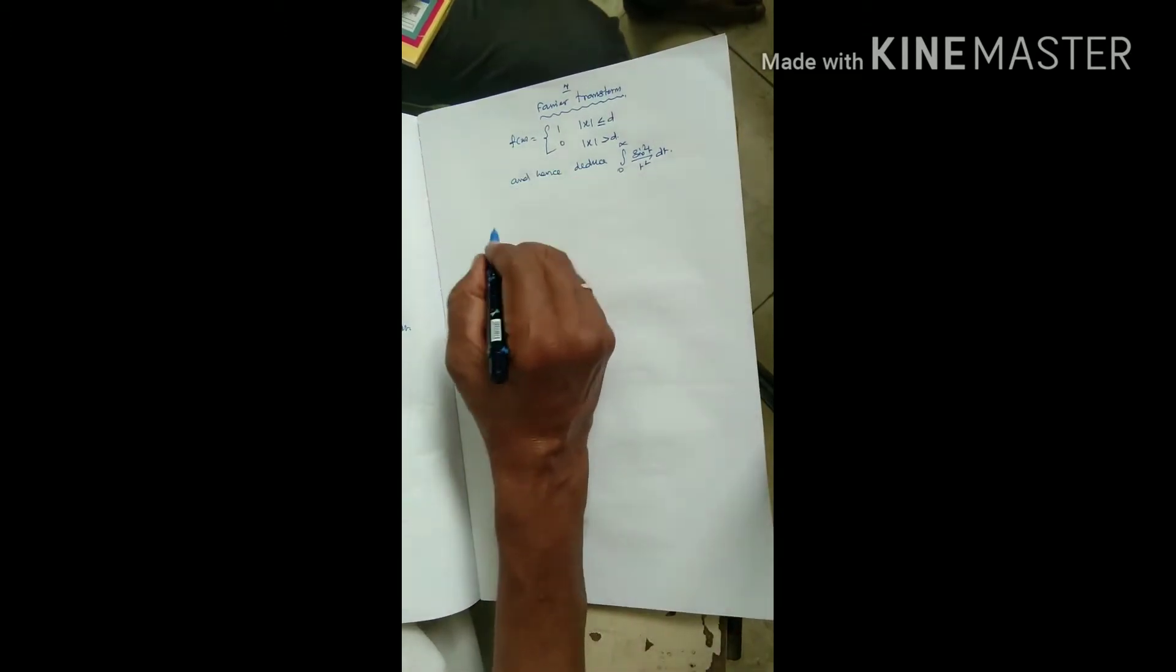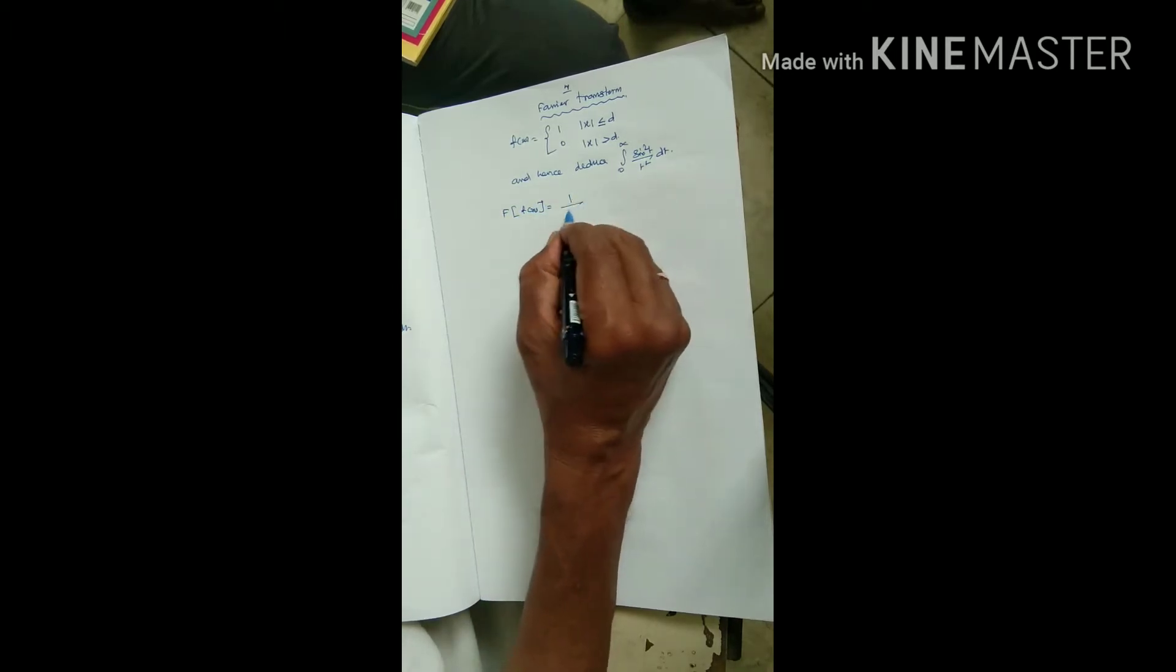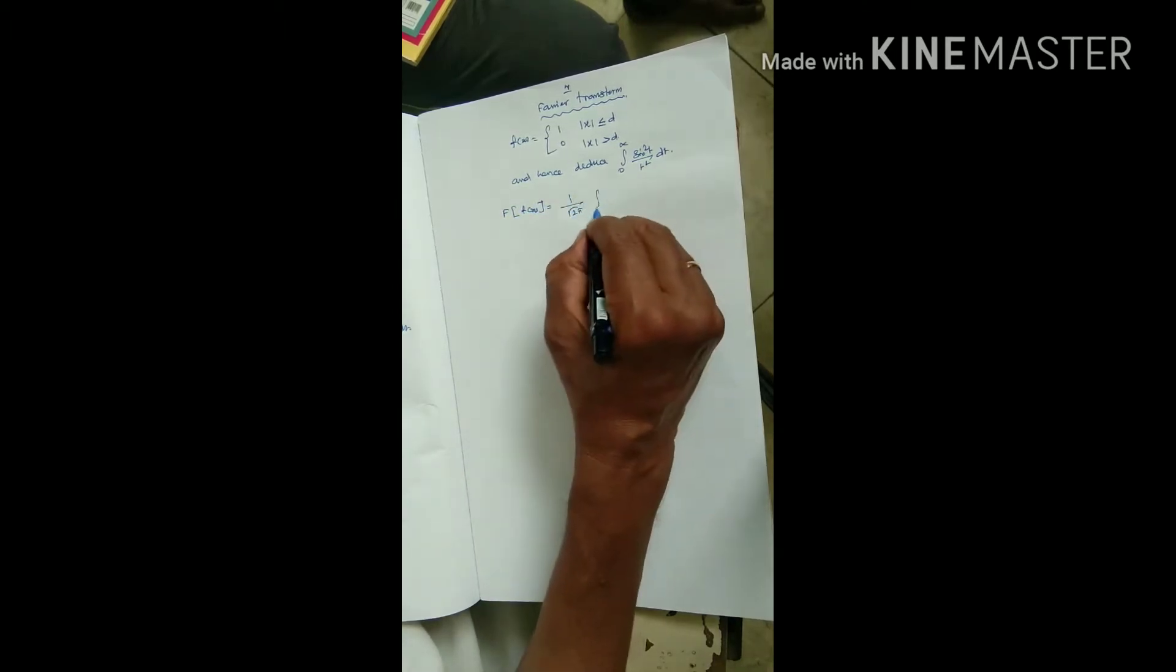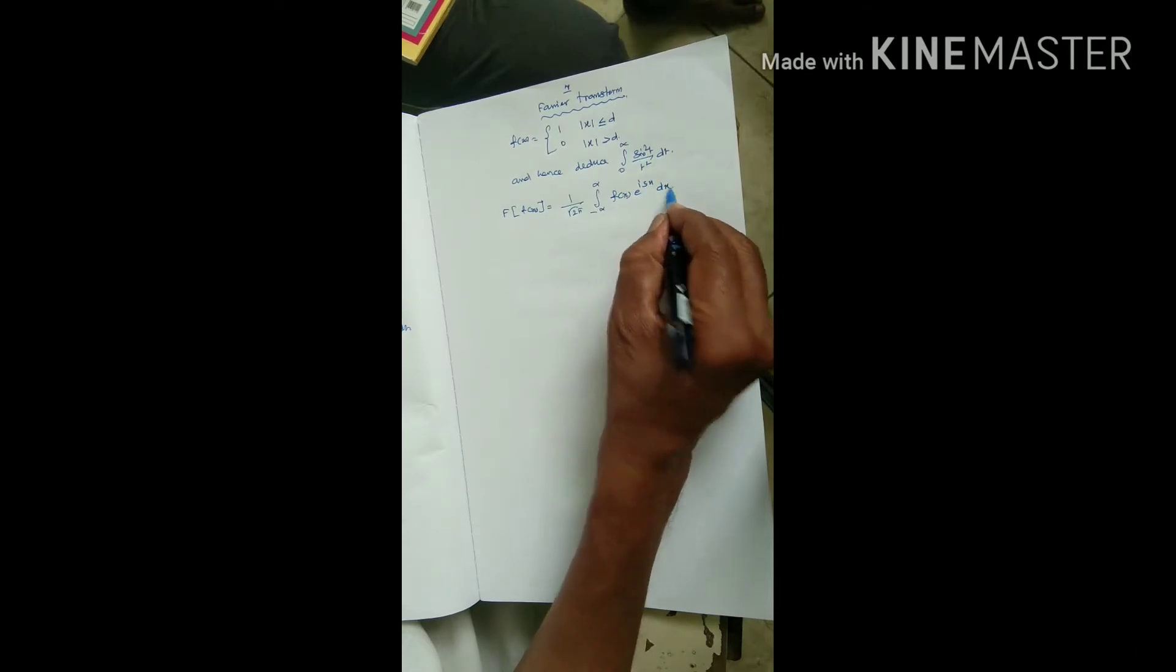We know the Fourier transform of f of x equals 1 by root 2 pi integral minus infinity to plus infinity f of x e power is x dx.